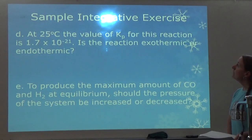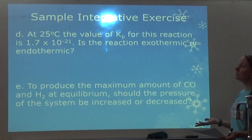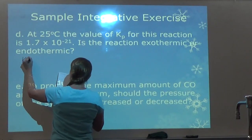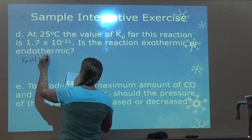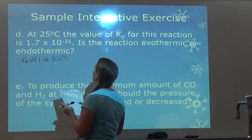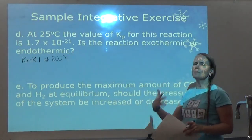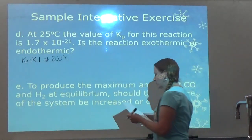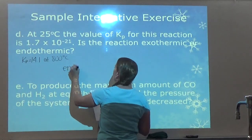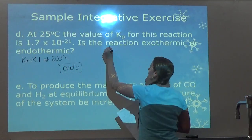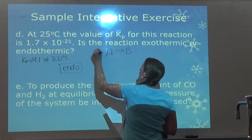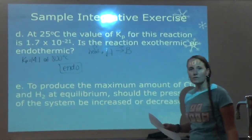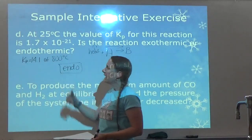At 25°C, the value of KP for this reaction is 1.7 × 10⁻²¹. Is the reaction exothermic or endothermic? KP was 14.1 at 800°C and super tiny at 25°C, so the reaction is favored at higher temperatures. That means heat must be a reactant — the reaction is endothermic — because as temperature increases, it favors the products, which is why K gets bigger at higher temperature.